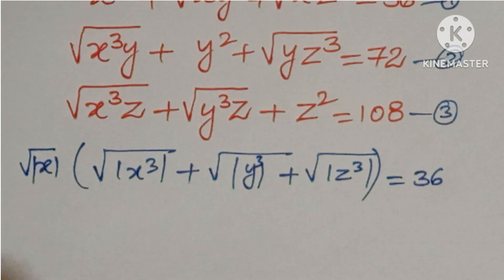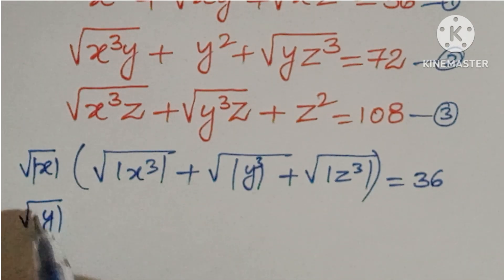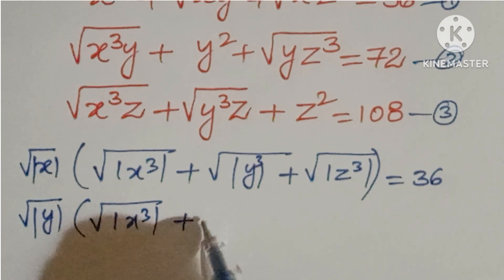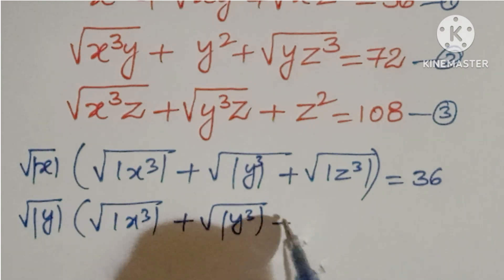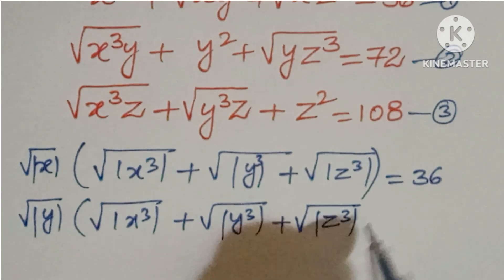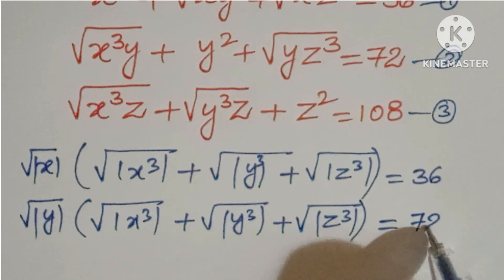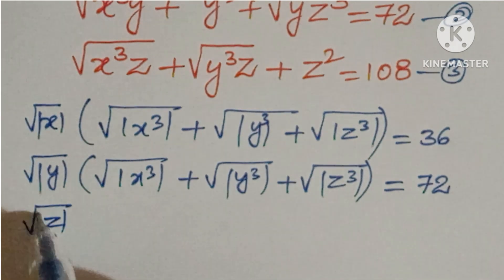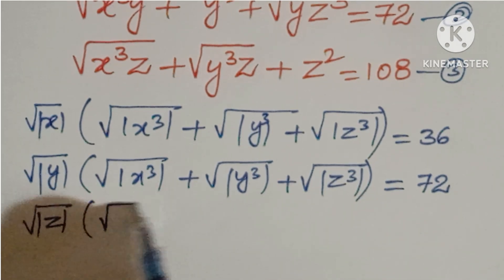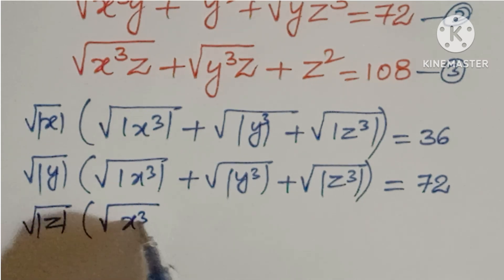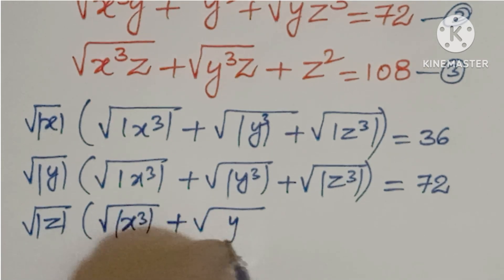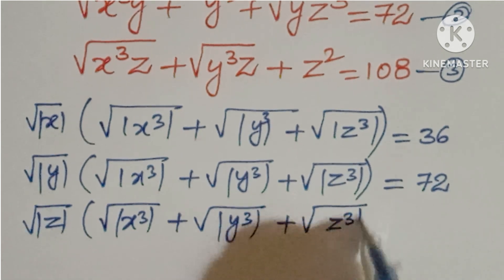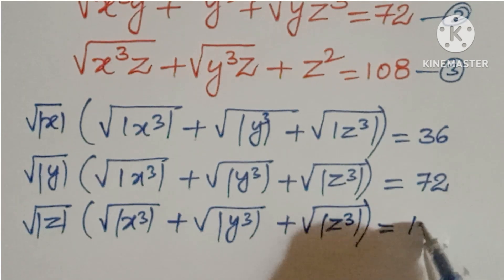Similarly, in the second equation taking √y common gives √(|x|³) + √(|y|³) + √(|z|³) = 72. In the third equation, taking √z common gives √(|x|³) + √(|y|³) + √(|z|³) = 108.